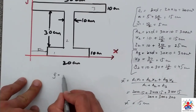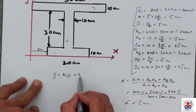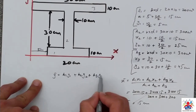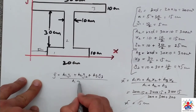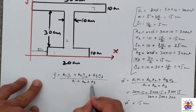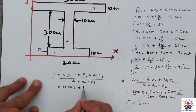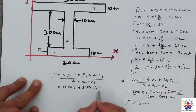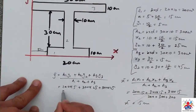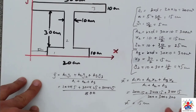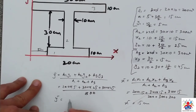Now we calculate y-bar: y-bar equals (A1·y1 + A2·y2 + A3·y3) divided by (A1 + A2 + A3). Plugging in: (200 × 5 + 300 × 25 + 300 × 45) divided by 800 equals 1000 + 7500 + 13500 divided by 800. So y-bar equals 27.5 centimeters.